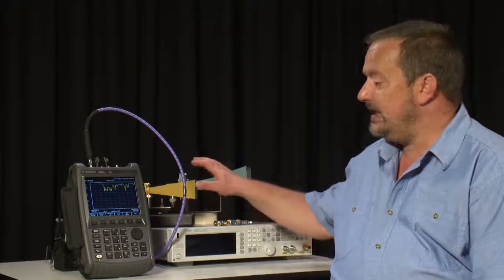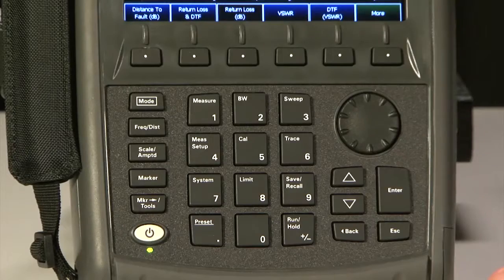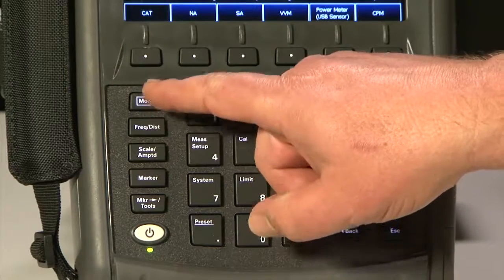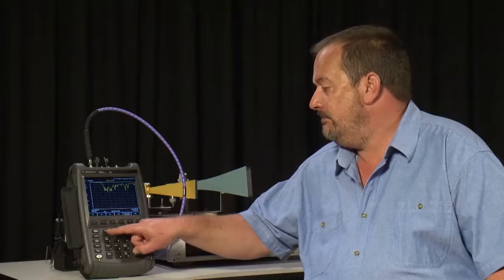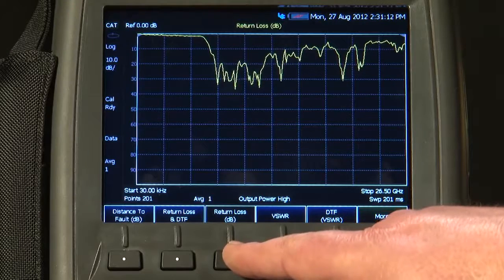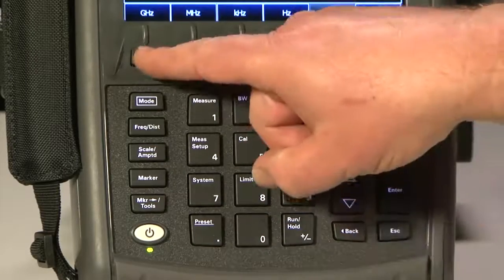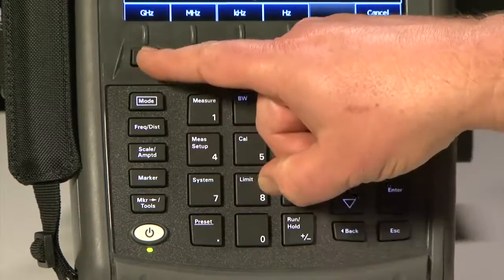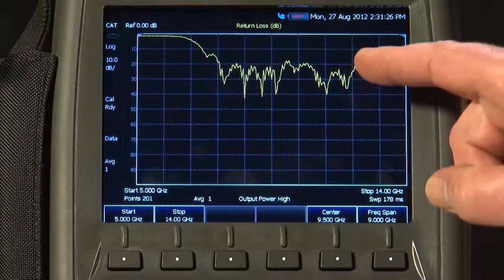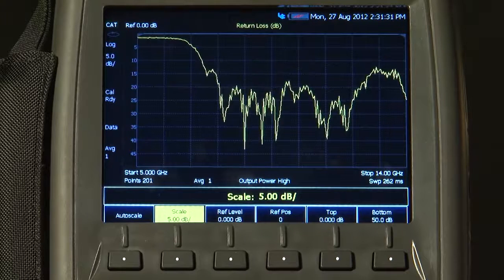Let's start by sweeping this X-band microwave horn antenna with a short test cable as we would in the workshop for acceptance testing prior to going out on site. First, I press MODE, and make sure we have CAT cable and antenna test selected. Then I will press measure, and we have return loss selected. So I will just set a start frequency of 5 GHz, and perhaps a stop frequency of 14 GHz. And you can see we are sweeping the return loss of the antenna. I will just change the scale to 5 dB per division so we can see it a bit more clearly.